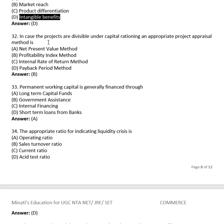Question 30: In case of projects being divisible under capital rationing — this question is from the capital budgeting chapter — the appropriate project appraisal method is: NPV method, profitability index (PI) method, internal rate of return method, or payback period method? The right answer is the profitability index method.